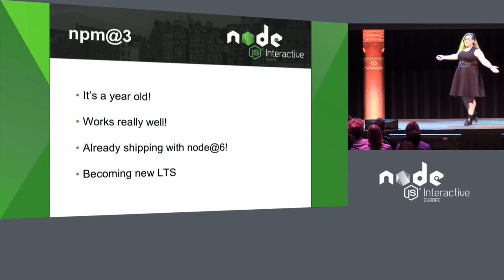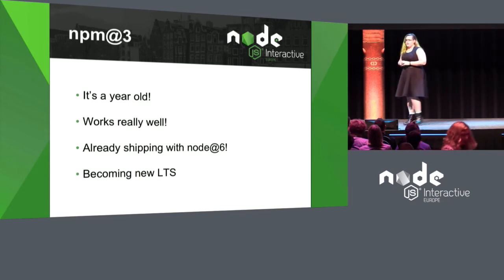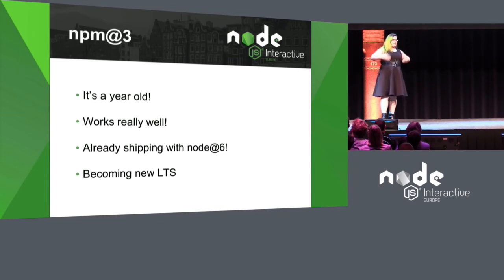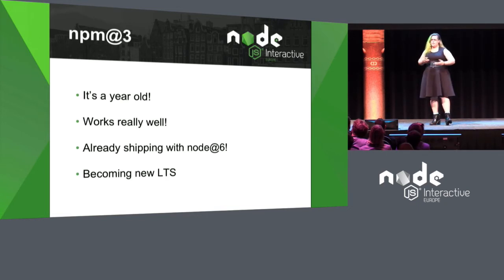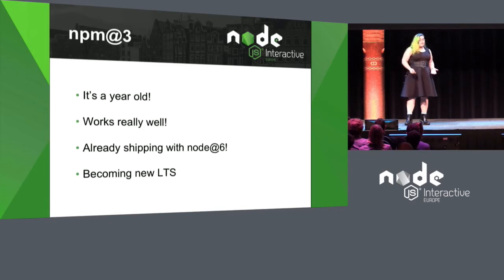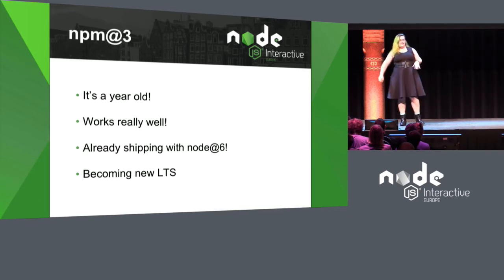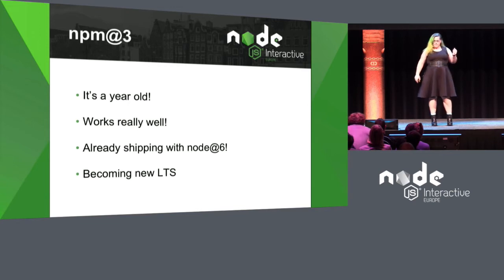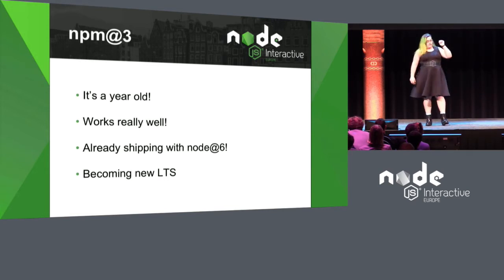NPM 3 came out about a year ago and it's come a long way since 3.0 and 3.3. I know a lot of you were early adopters and saw it was maybe too slow, or the progress bar was slowing things down, or there were installer issues. That's not what NPM 3 is like anymore. It's a very different beast as of 3.10-something, which is where we are — I think it's 3.10.8 as the latest. It came with a lot of changes: it flattened the install, made NPM more reliable, and fixed a bunch of race conditions. It's already shipping with Node 6, our new LTS.